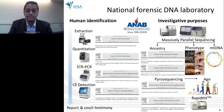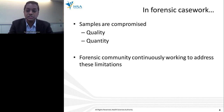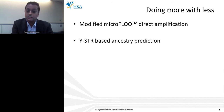In forensic casework, the samples we deal with are mostly compromised, with questionable quality and typically very limited quantities. The forensic community is continuously working to address these limitations. We are currently evaluating the new Promega bone DNA kit, which has shown promising results for use with difficult body remain samples such as those seen in DVI situations. The basis of 'doing more with less' relates to getting more value, more data, more savings in costs and time with less input. I will be sharing two methods we have developed.